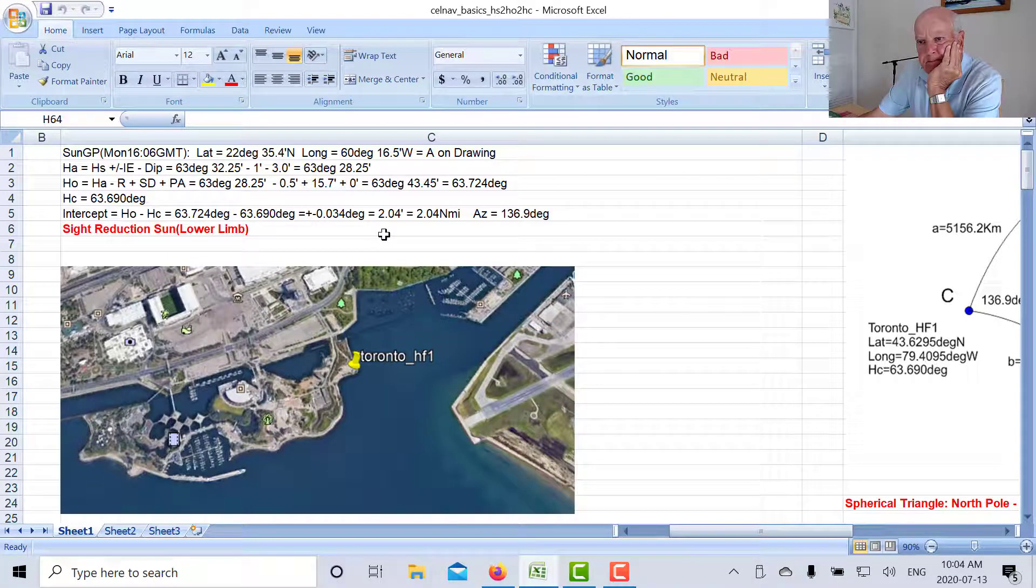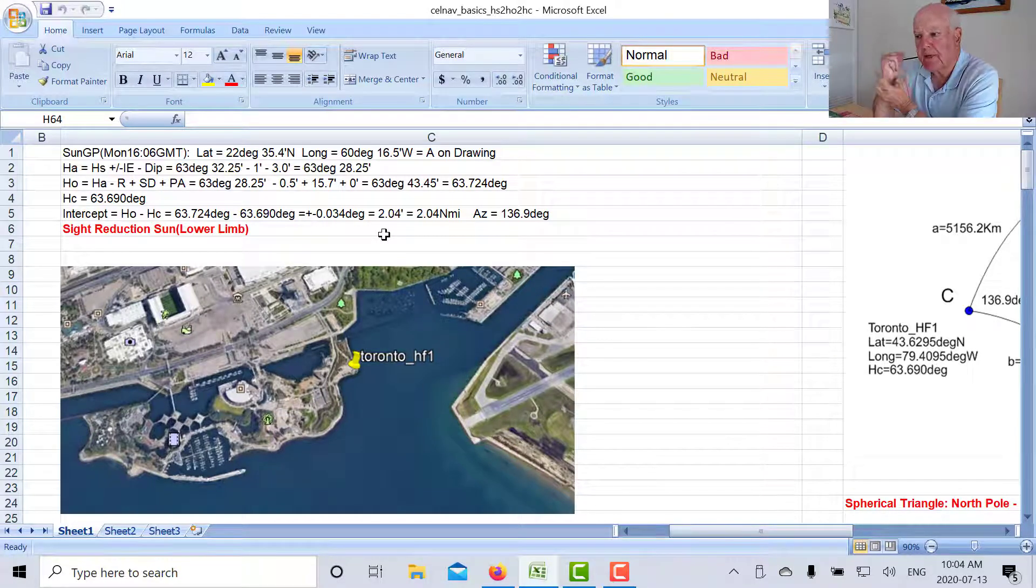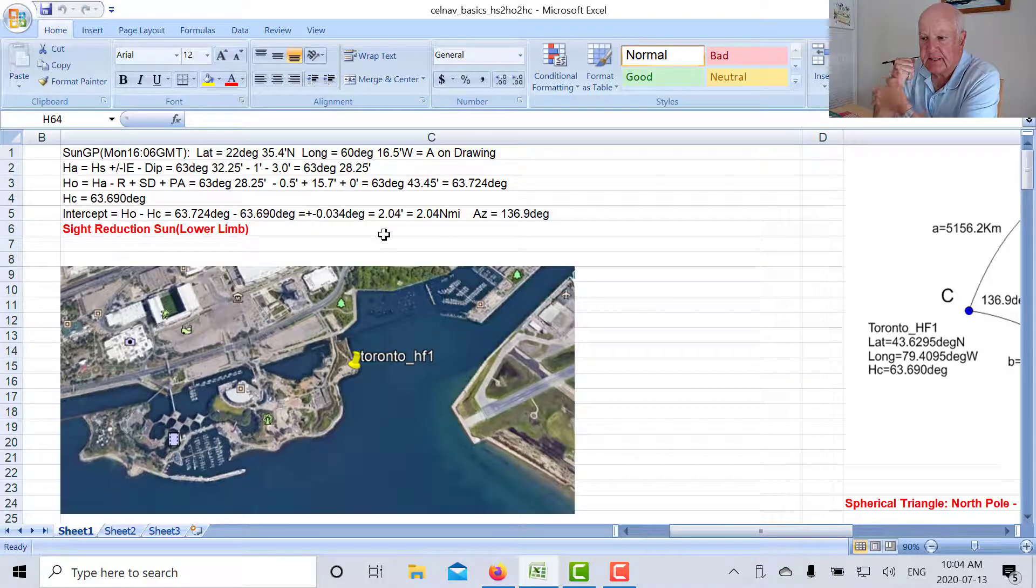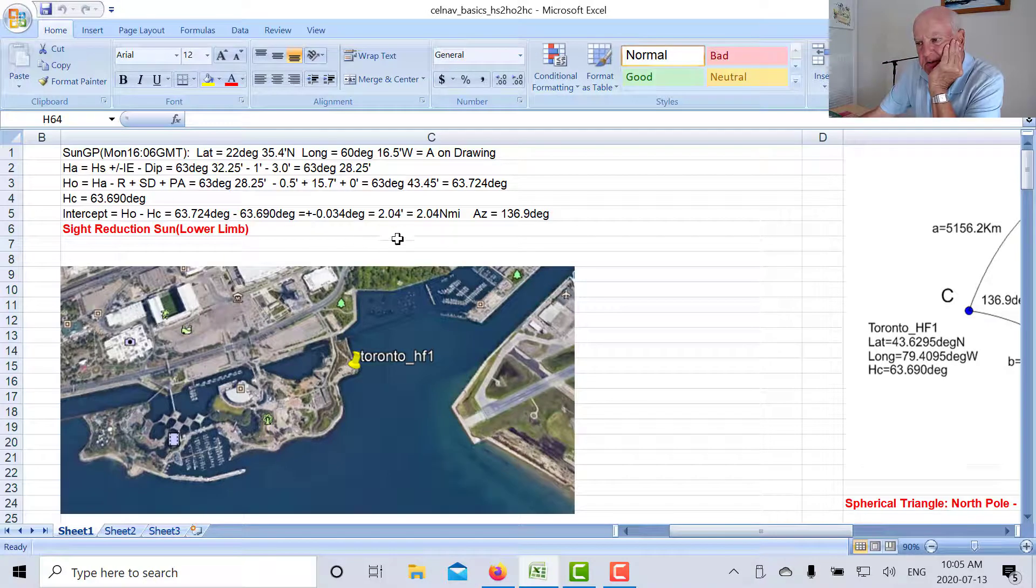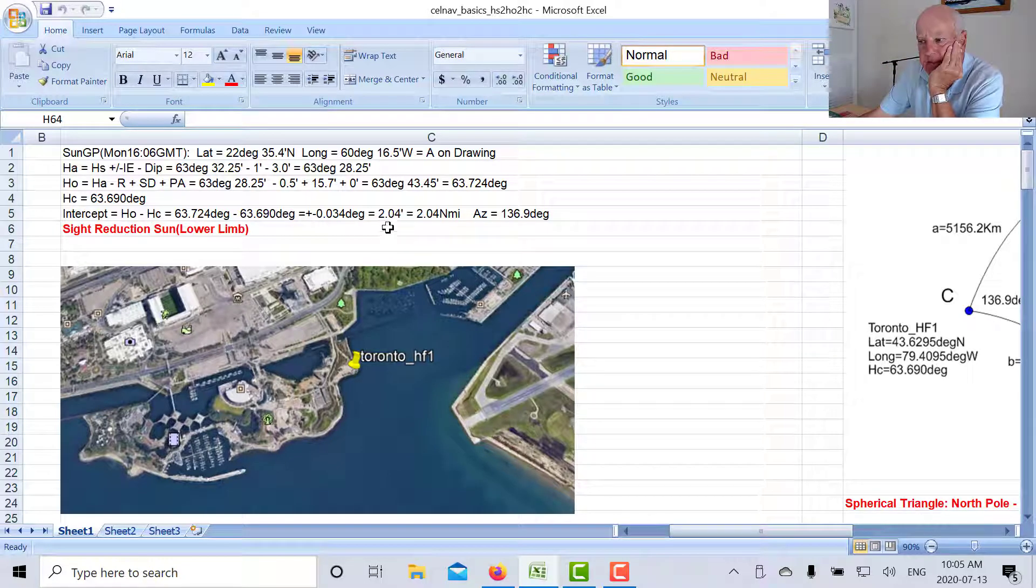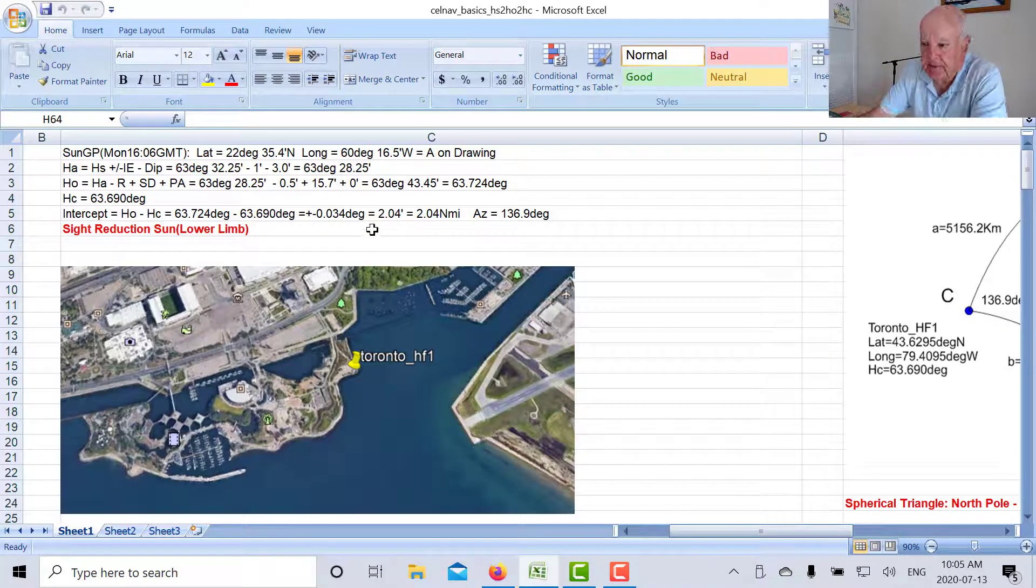In any case our intercept here was two minutes so it's a little bit high. Don't expect on my particular sextant the micrometer drum reads down to one minute, so expecting anything way beyond one minute is probably not realistic. So two minutes is a little bit high but anyways that's my intercept.